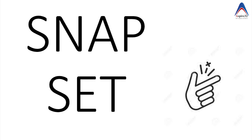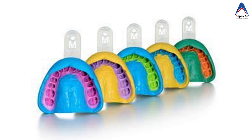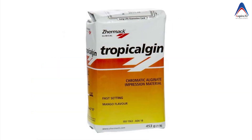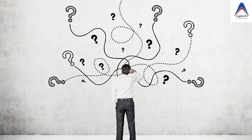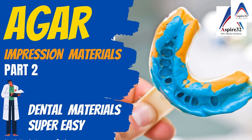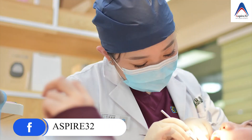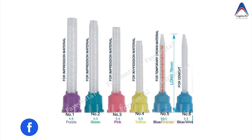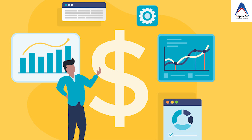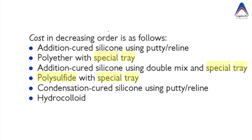Now let's talk about the cost of these various impression materials. Alginate is the cheapest of all impression materials. The most expensive is the polyether, though agar, when equipment costs are considered, may end up costing more than polyether itself. As per Stadovart, polyether and addition silicone cost around $12 per impression. Although tips for static auto mixing seem to add cost, the textbook states that hand mixing wastes three to four times more material than the tips. Some other books mention addition silicone as the most expensive impression material.